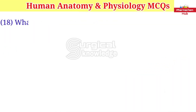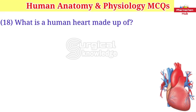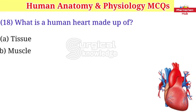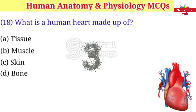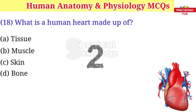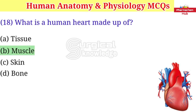What is a human heart made up of? A. Tissues B. Muscle C. Skin D. Bone. Right answer is muscle.